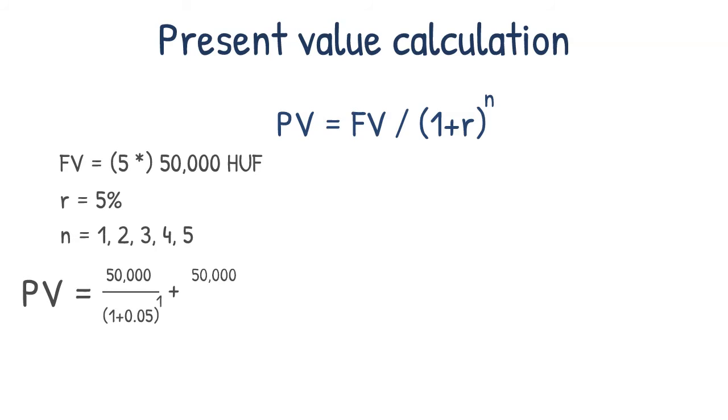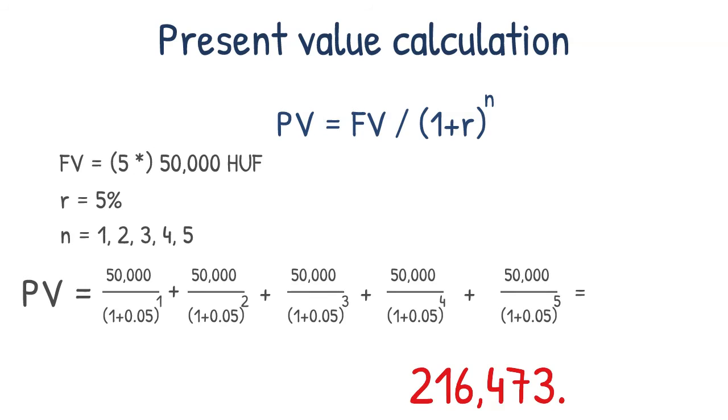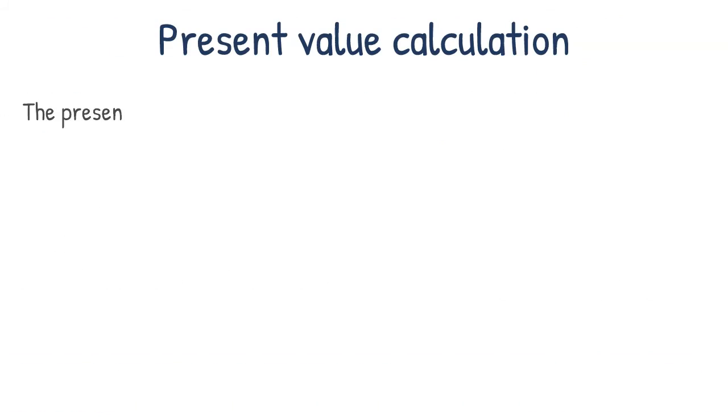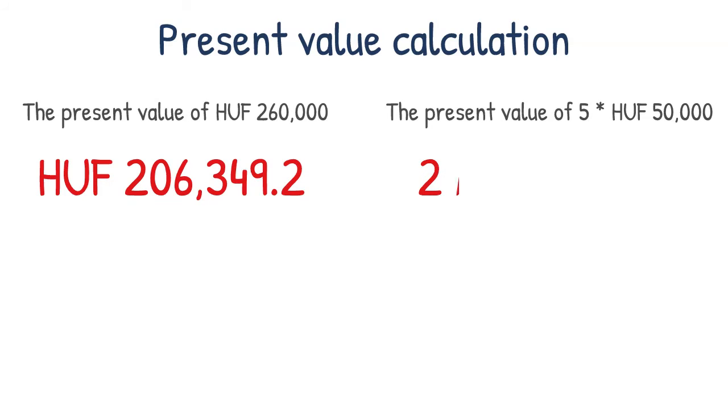If we substitute this, the formula will look like this. Although we are talking here about money received at different times, the fractions all express the present value, so the discounted value, of the given amount. That is, we can add this up without further ado. Then you would have to invest 216,473 forends to receive the same amount at the same time. So you get a little more with this imaginary bank than with the other investment.